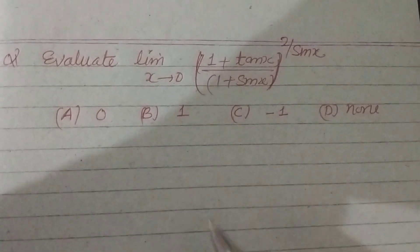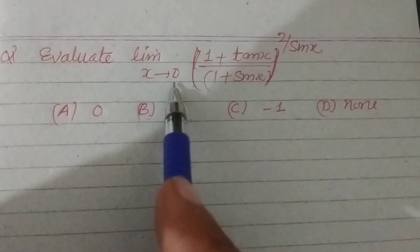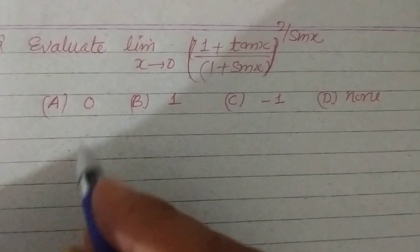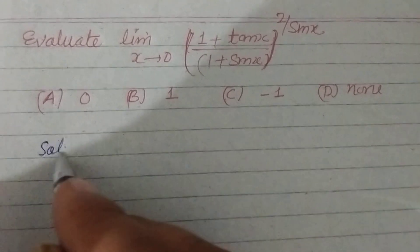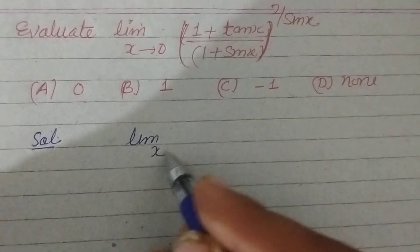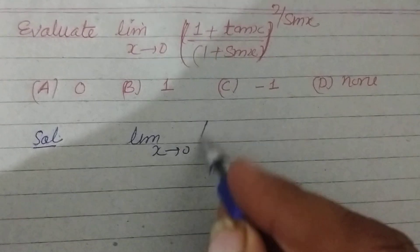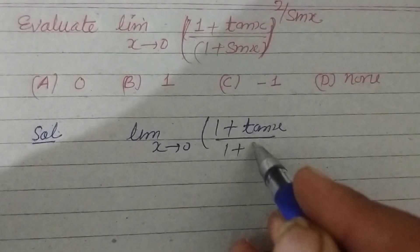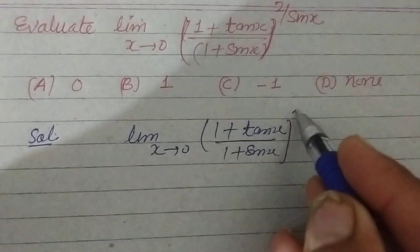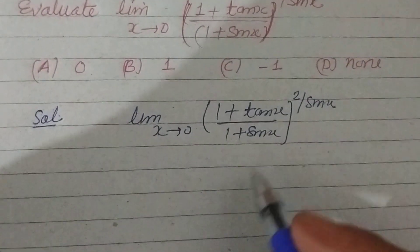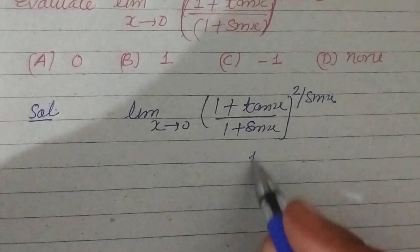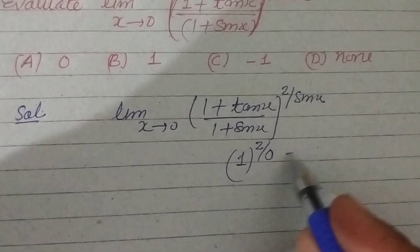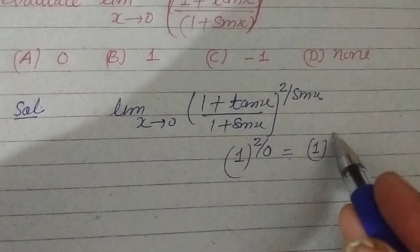Hello students, welcome to this YouTube channel. Evaluate the limit x tends to 0 of (1 + tan x) over (1 + sin x) to the power 2 upon sin x. By putting x = 0, we check that this gives 1 to the power infinite, which is an indeterminate form.